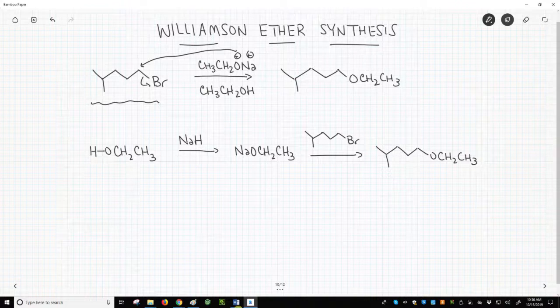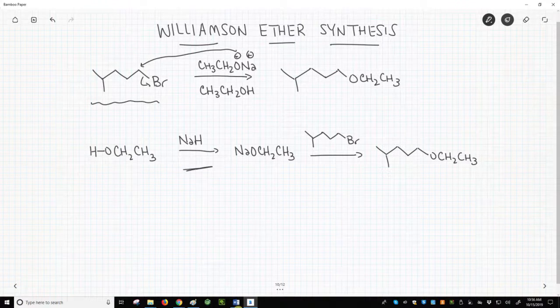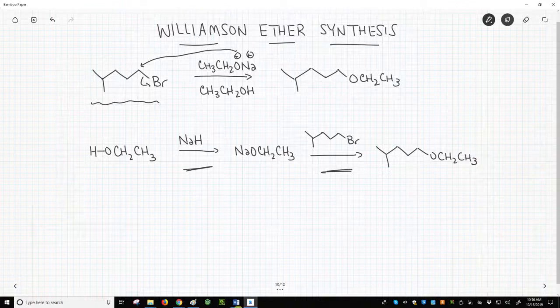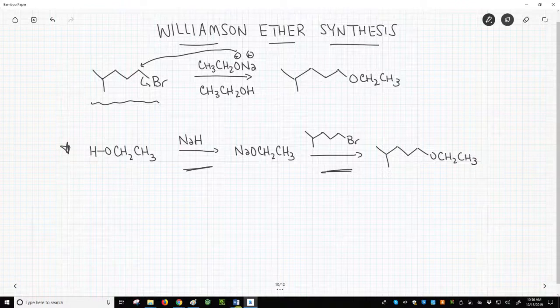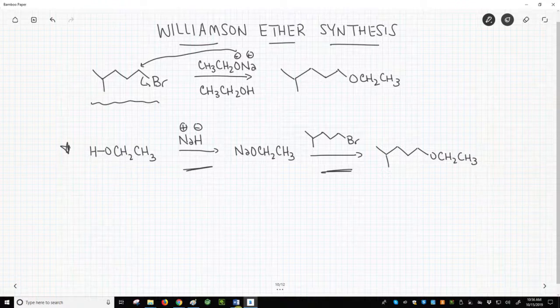Often when alkoxides are used as nucleophiles, the reaction will be broken up into two steps: a step for making the alkoxide and a step for the SN2. In this case, we show our alcohol, ethanol, as our main starting material. In the first step, we would form the alkoxide. We've used sodium hydride as the base.